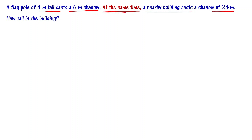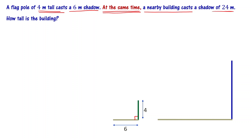At the same time, a flagpole of 4 meters tall casts a shadow of 6 meters length. The flagpole casts a shadow of 6 meters, and the building casts a shadow of 24 meters at the same time as well. This is very important.